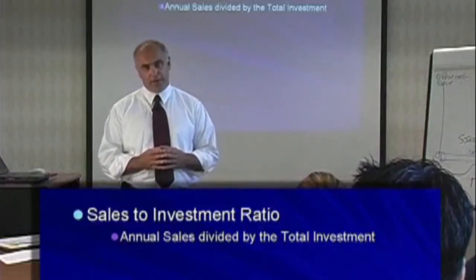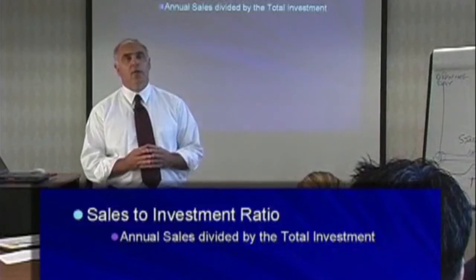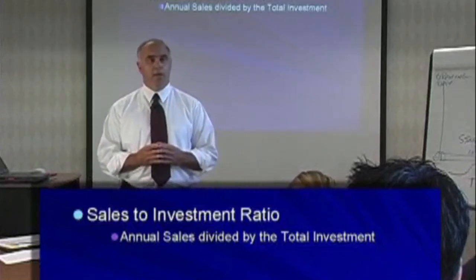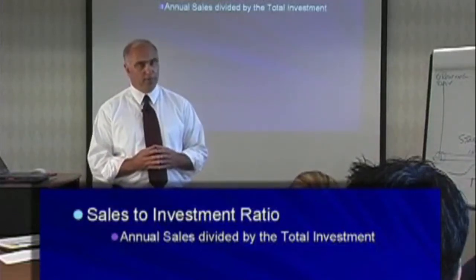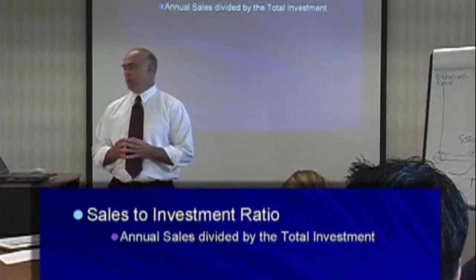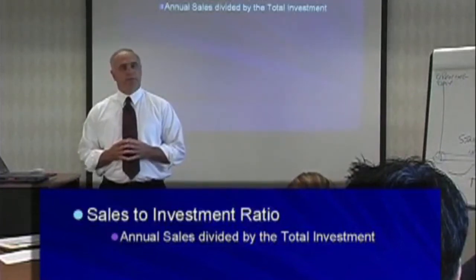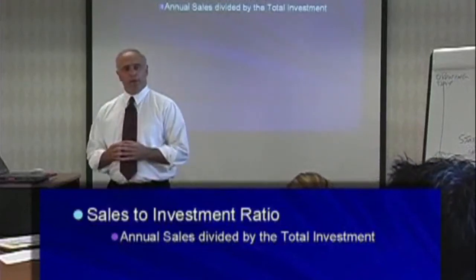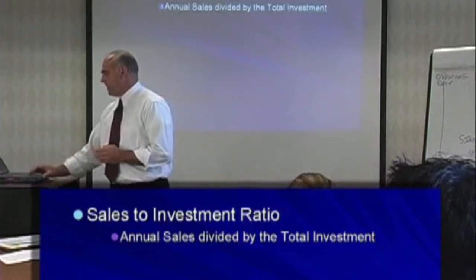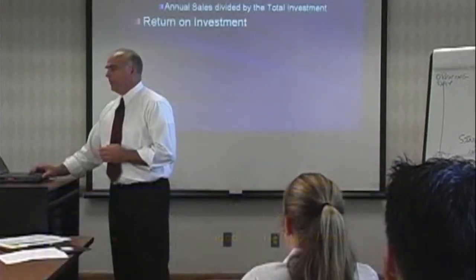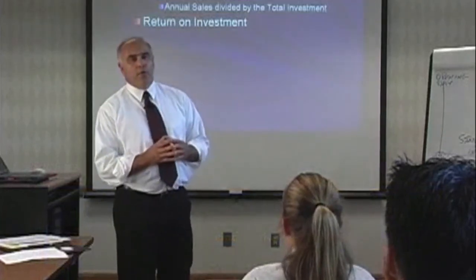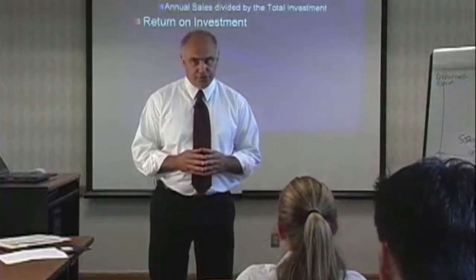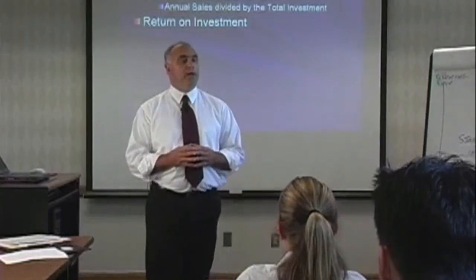We could have annualized those projected sales by multiplying the winter quarter forecast by four, estimating annual sales and calculating the sales to investment forecast at the beginning of the business's life. Now that the year has gone by, we have the actual sales data and actual investment figures. Sales to investment ratios in the restaurant business tend to run at about a two to one relationship — meaning you want to demonstrate the ability to generate at least two dollars in sales for every dollar of investment.